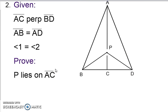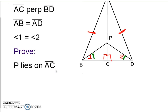This next proof is a little more involved. Let's go ahead and mark our diagram first. We have that AC is perpendicular to BD, that AB is congruent to AD, and that angle 1 is congruent to angle 2. What we're trying to prove is that P lies on AC. Like the last proof, in order to show that P lies on AC, we're going to show that AC is the perpendicular bisector of BD, and also that P is equidistant from B and D, then use this new theorem. To show P is equidistant from B and D, we want to show those two segments are congruent by proving the two triangles congruent first.